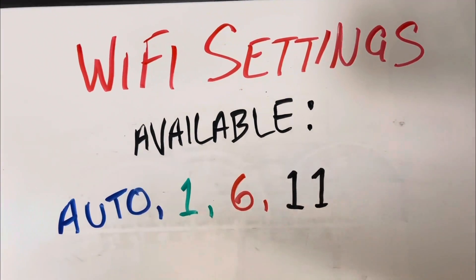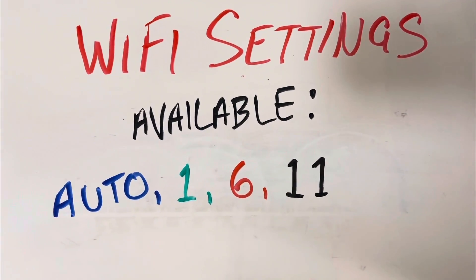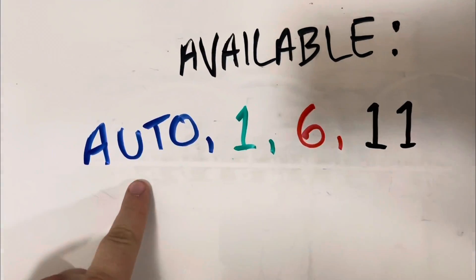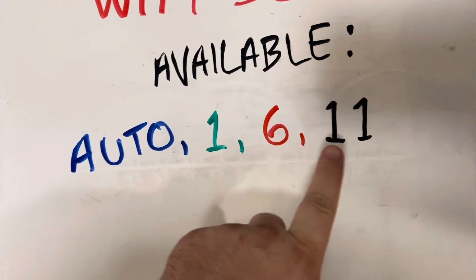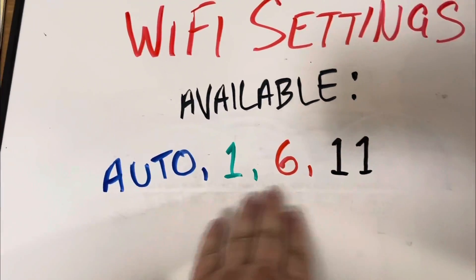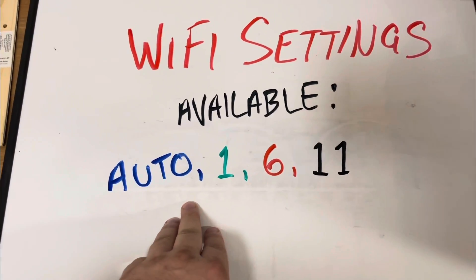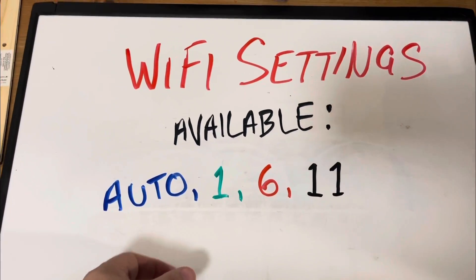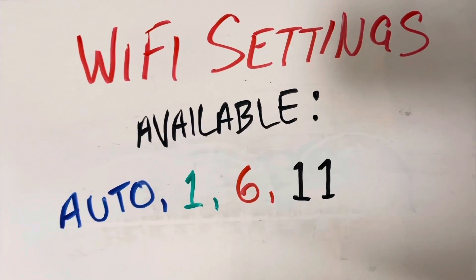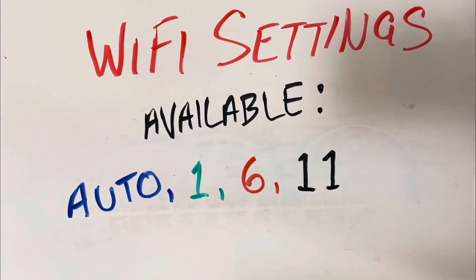If you're going to choose this setting, the options you have available that you should choose from are either auto, 1, 6, or 11. Don't choose anything other than those four options because if you choose something different, you might have some interference and connectivity issues with your Wi-Fi.